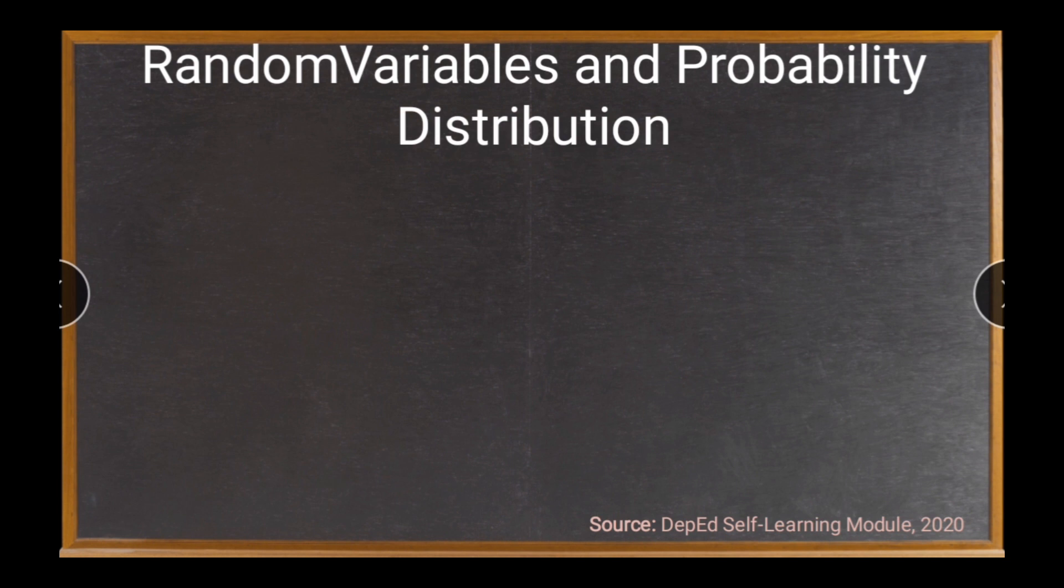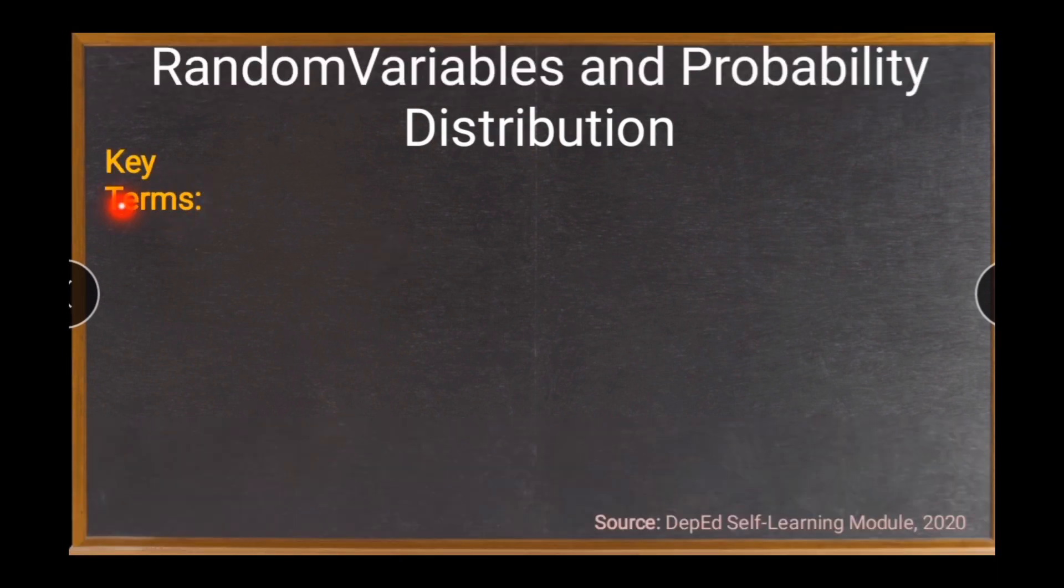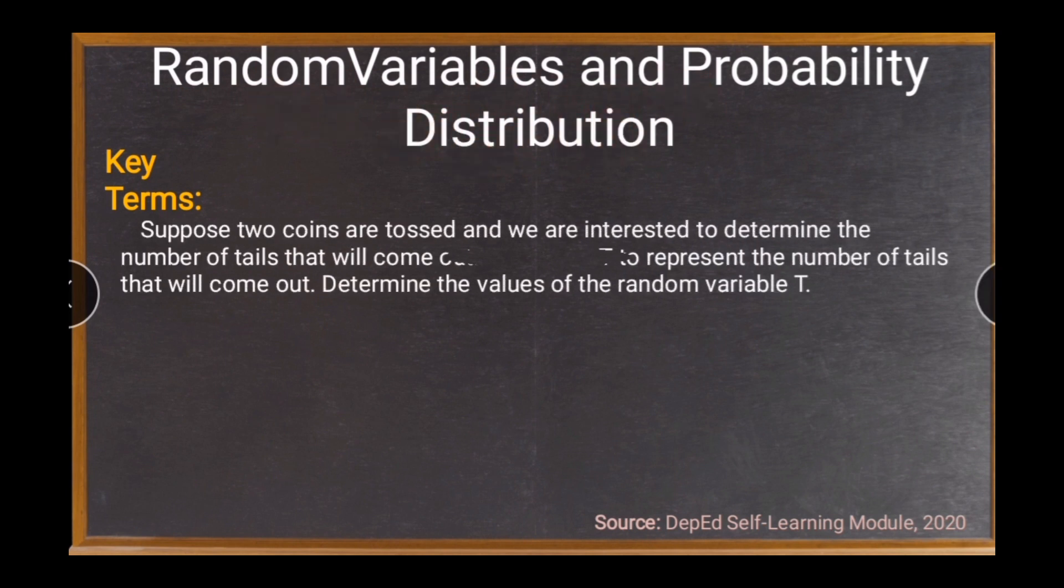We will start with the key terms that will be useful in understanding the different concepts to be included in this lesson. So we will consider this situation. Suppose two coins are tossed and we are interested to determine the number of tails that will come out. Let us use capital letter T to represent the number of tails that will come out. Determine the values of the random variable T. From this situation, we will define first random variable.